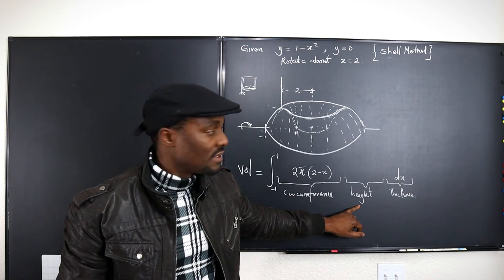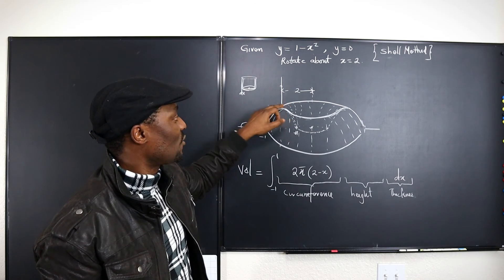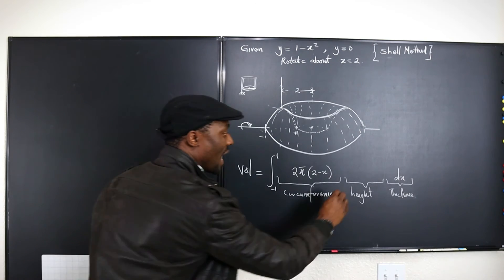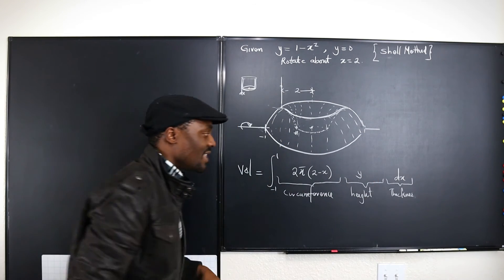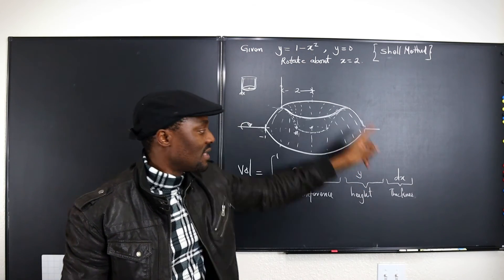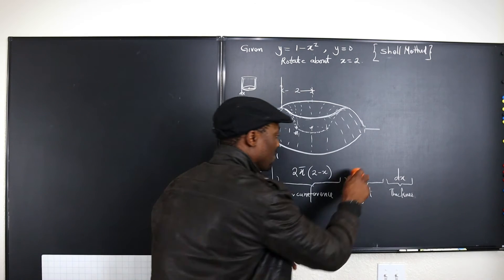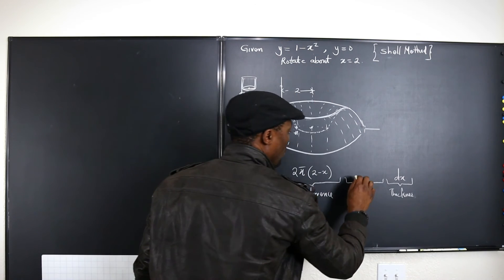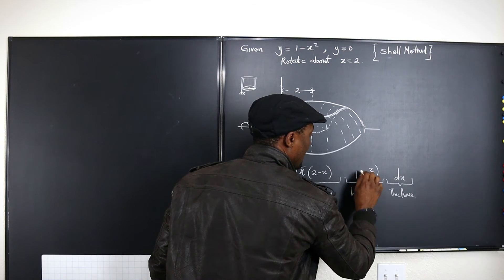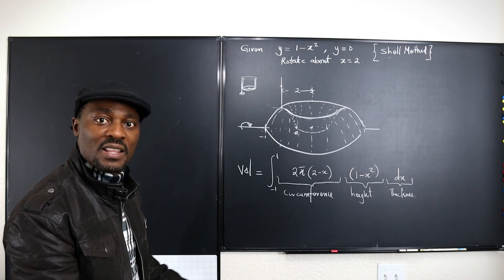Now let's talk about the height. What is the height of each of the shells? Each shell just has to be as high as y — so y is the function, and that's our height. Instead of writing y, we can replace it with the function since we're integrating with respect to x. So I'm going to put the function there, which will be 1 minus x squared. That's our y, and we're done — we just need to integrate this because we have set up the integral.